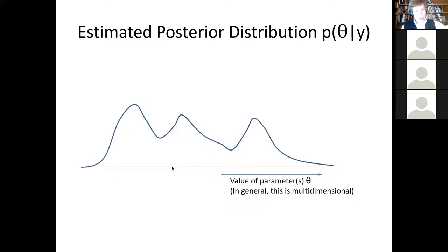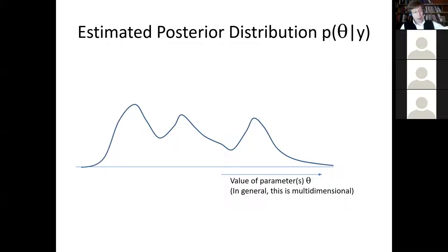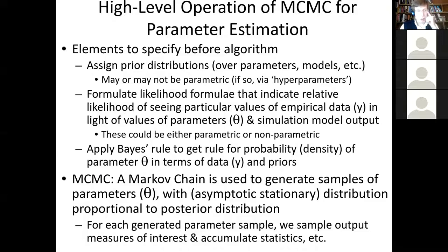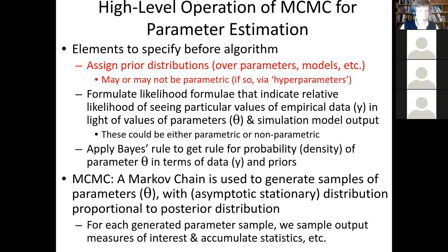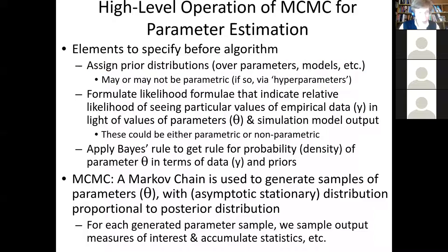We want to sample from what's called a posterior distribution. Given the observations y, what's the probability that the parameters hold a certain value? Shown here as a single value, each value of theta has a certain probability. In general it's a 2D space, like mountains coming out of the page — some areas sticking out with higher probability. This is a Bayesian algorithm, so we have a prior distribution reflecting some subjective probability. An important feature different from approximate Bayesian computation is we're going to have likelihood formulae.